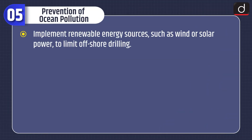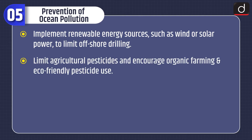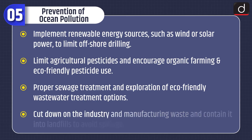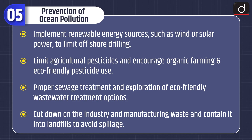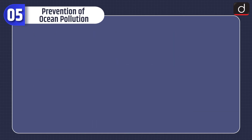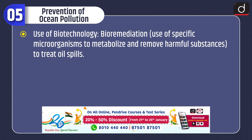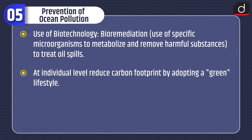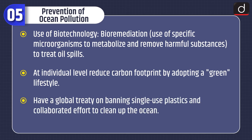Lastly, prevention of ocean pollution: implement renewable energy sources such as wind or solar power to limit offshore drilling; limit agricultural pesticides and encourage organic farming and eco-friendly pesticide use; ensure proper sewage treatment and explore eco-friendly wastewater treatment options; cut down on industry and manufacturing waste and contain it in landfills. Use biotechnology — bioremediation uses specific microorganisms to metabolize and remove harmful substances to treat oil spills. At the individual level, reduce carbon footprint by adopting a green lifestyle, and support a global treaty banning single-use plastics with collaborative efforts to clean up the ocean.